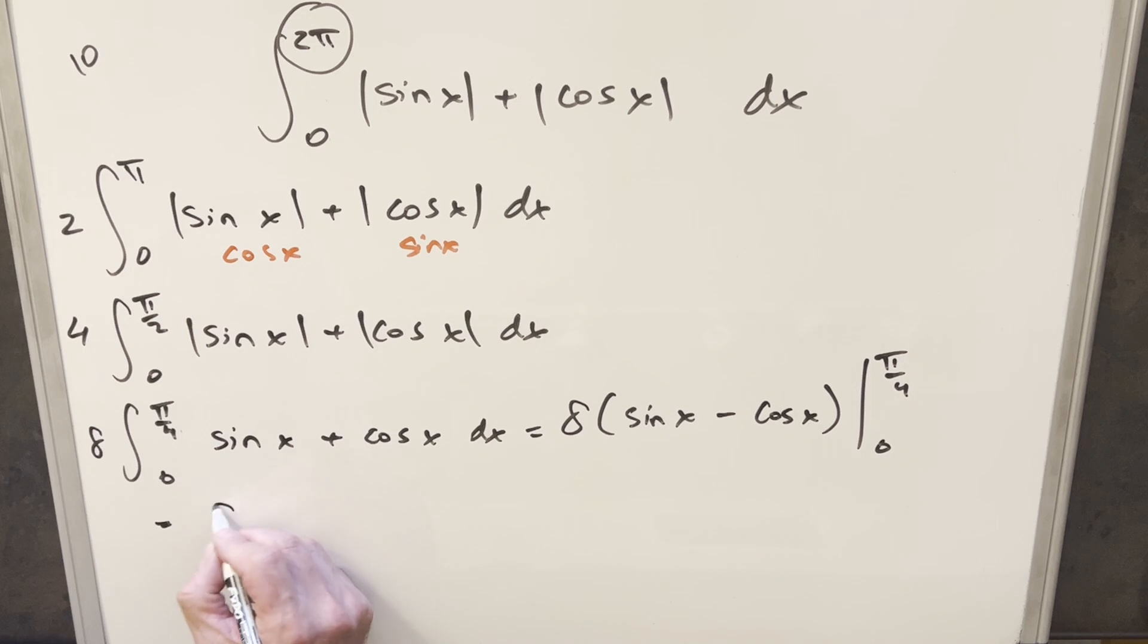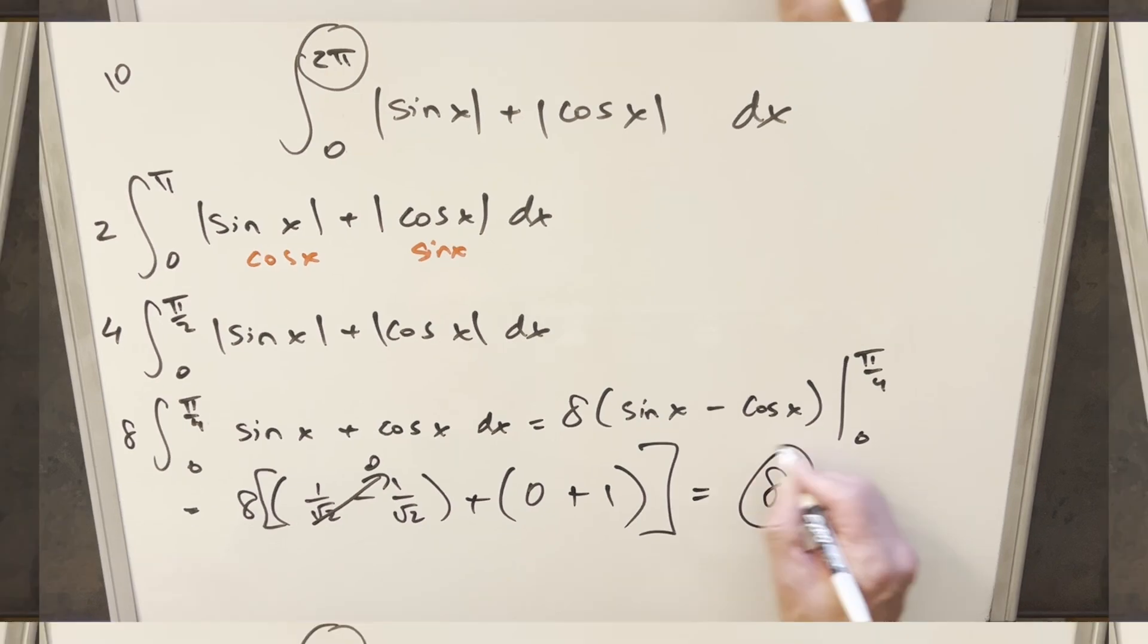And then evaluating this, we'll have our 8, then sine at π over 4, that's going to be 1 over square root of 2, minus cosine of π over 4 is the same thing. So this first piece, actually, this is going to be a 0. Then for the second part, evaluating sine at 0, that's a 0. Evaluating cosine at 0, that's just 1. Minus times minus is plus here. 1 times 8 gives me my final solution of just 8.